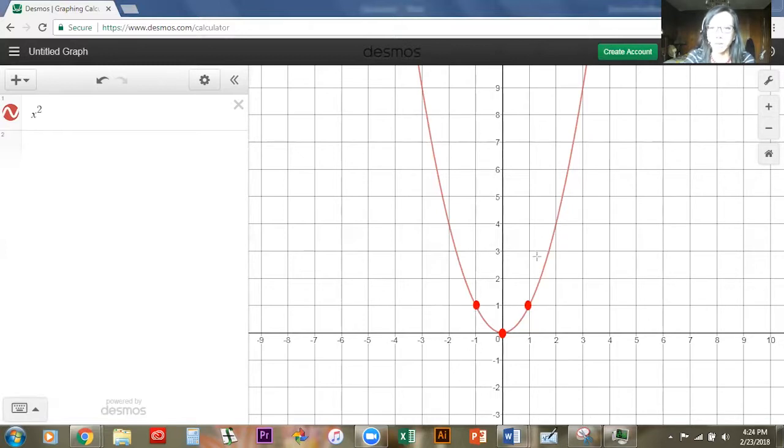Now these dots are easy for us to put on: zero zero, one one, negative one one. If we wanted another dot after that, we would go maybe to two four. Two squared is four and negative two is also four. That gives us, if we're drawing this graph by hand, some nice dots for us to go through. Now obviously Desmos does all that for us. We don't need those dots but I just want you to remember where they are.